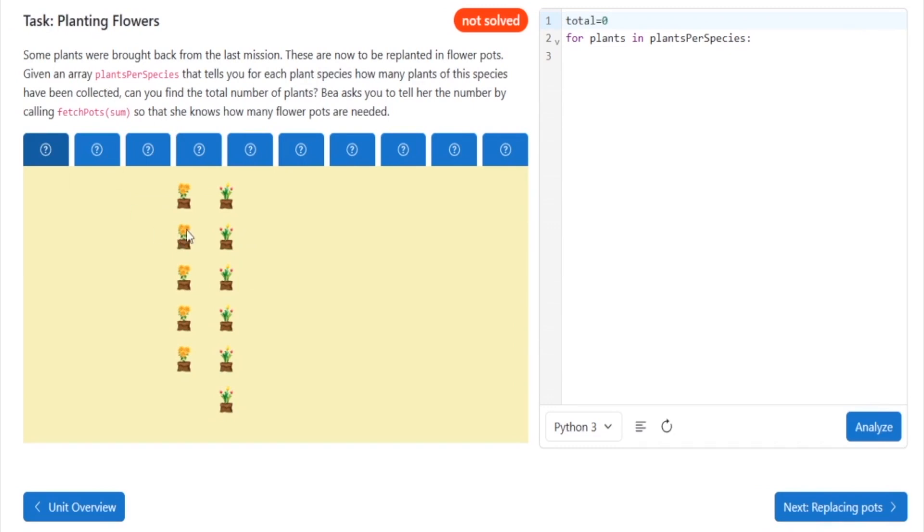As we prepare to replant the plants collected from our last mission, we need to determine the total number of plants we have. Each element in the array, plants per species, represents the count of plants for a specific species. To calculate the total number of plants, you'll need to iterate through each element in the array using a for loop. Once you have calculated the total number of plants, please call the function fetch pots sum and pass the total as an argument. This function will help me determine the number of flower pots we need for replanting. Your contribution will greatly assist us in efficiently organizing the replanting process.